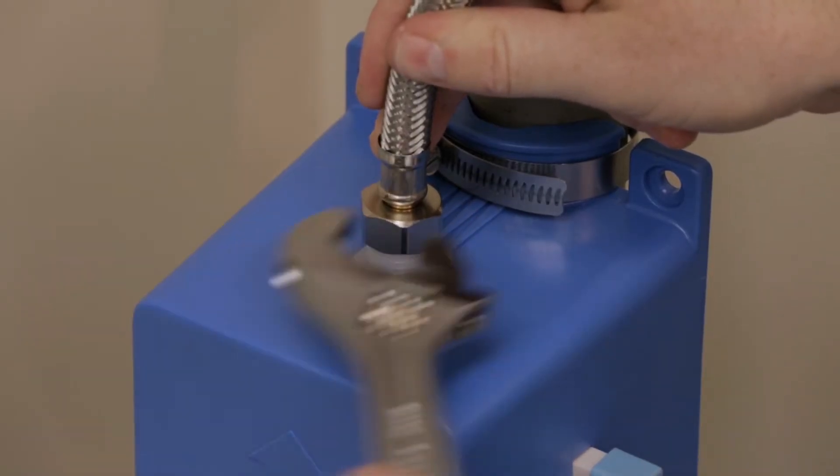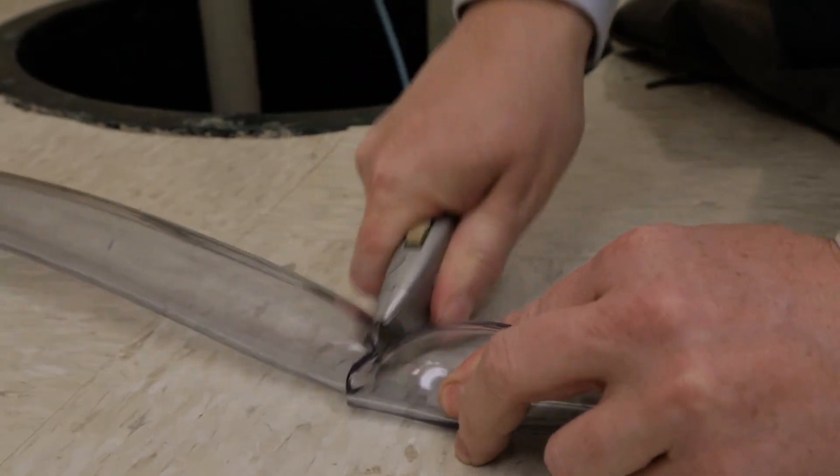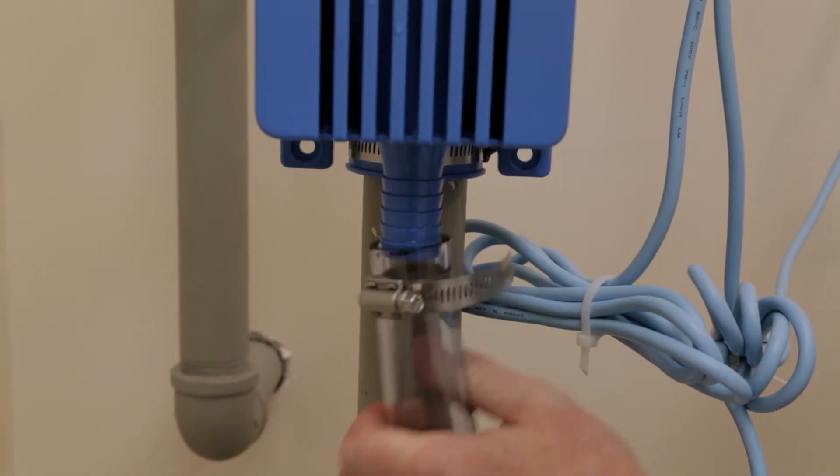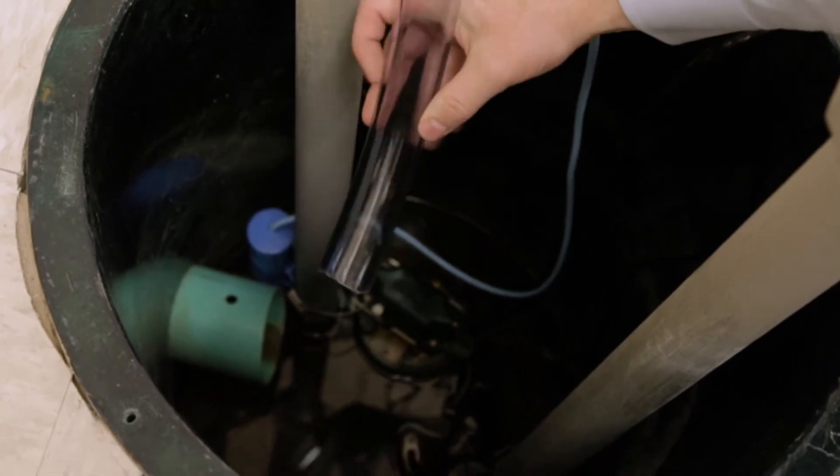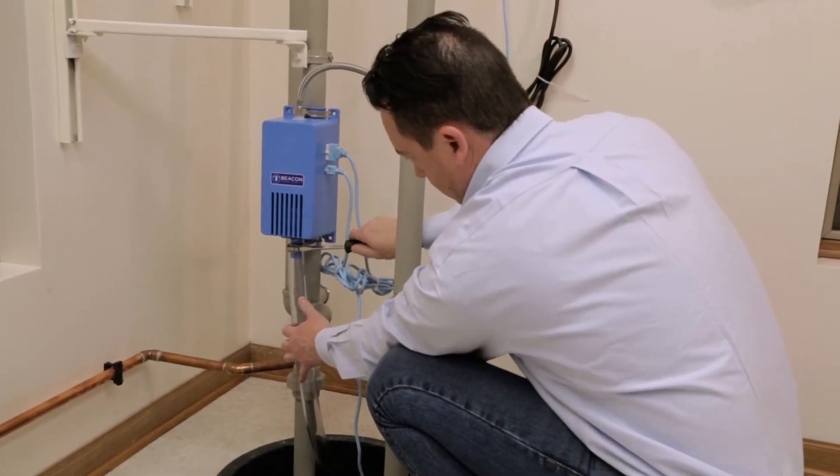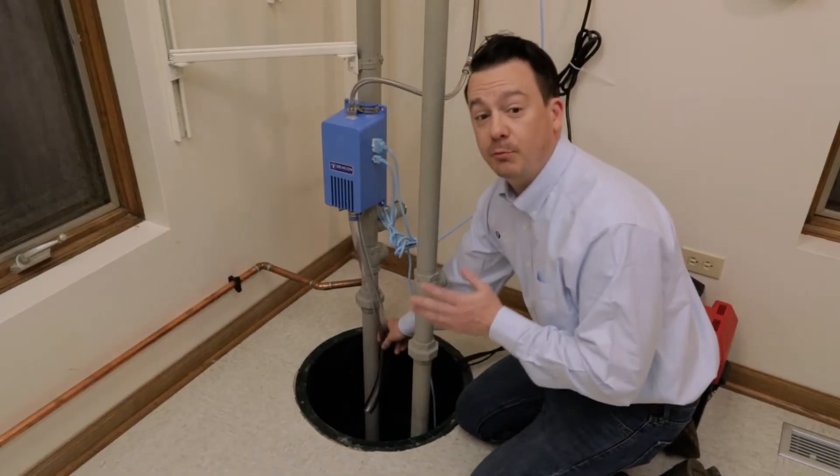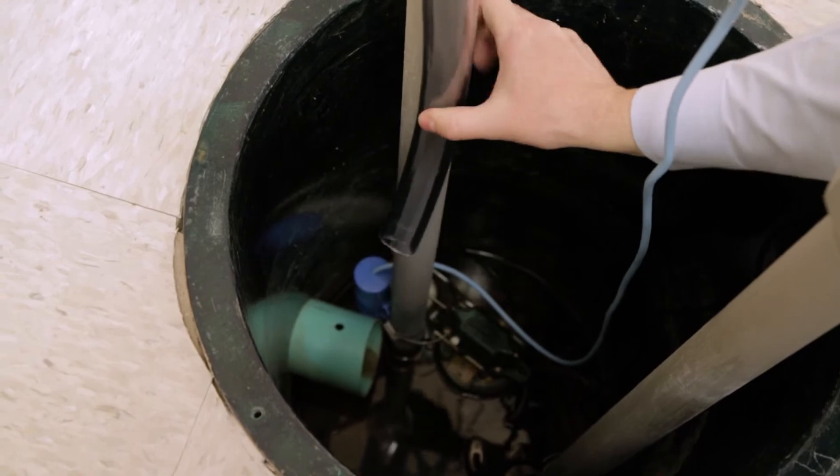After all connections are made, confirm that the shutoff valve is open. Cut the supplied hose to the appropriate length. Connect one end of the hose to the valve module and position the other end inside the sump pit. You may have to drill an additional hole in your sump pit cover. Install the hose so that the water flows straight down and avoid pointing it directly at any float switches or drain inlets in the pit.